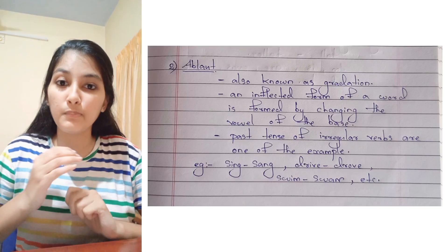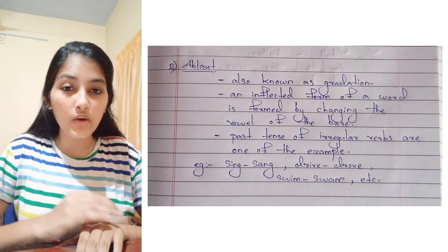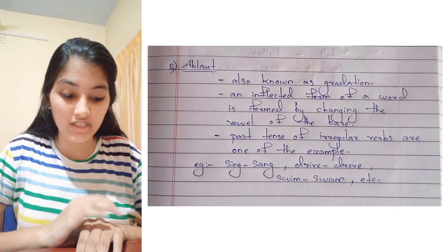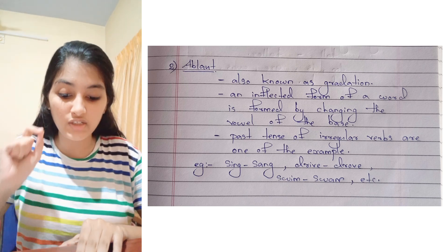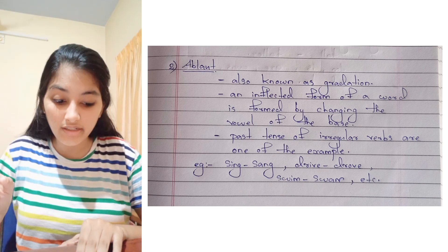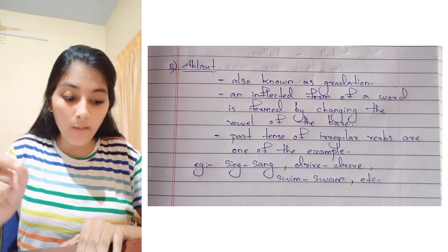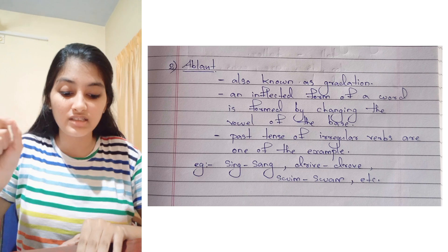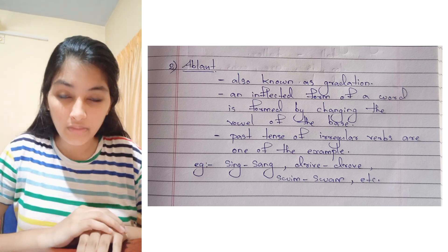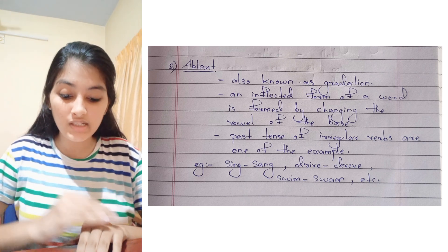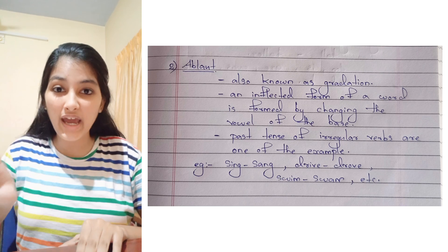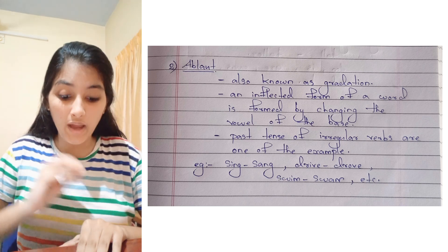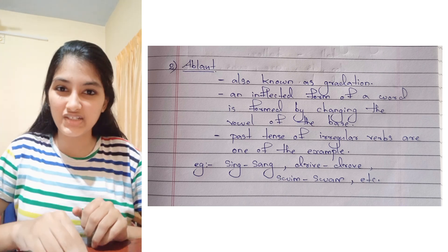The second non-concatenative process is ablaut, also known as gradation. It is a process in which an inflected form of a word is formed by changing the vowel of the base. Examples: sing–sang, drive–drove, swim–swam, etc.